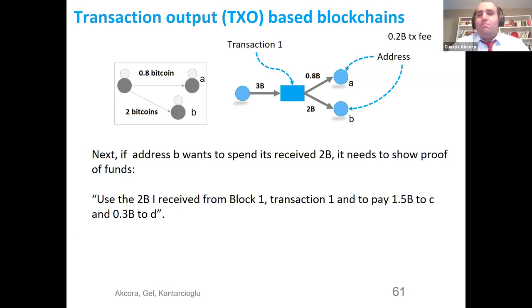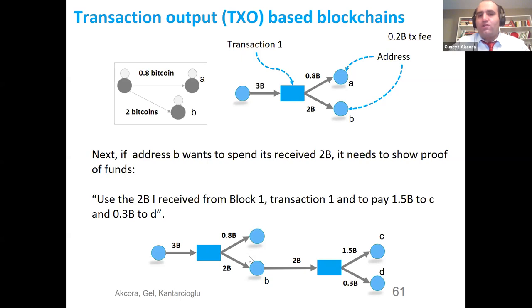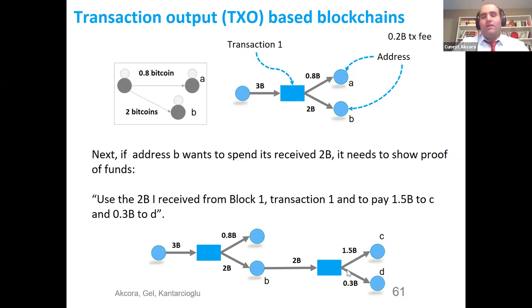Let's say B received two Bitcoins in a transaction and wants to spend them in another transaction. It needs to show proof of funds. When B wants to spend these two Bitcoins, it has to say: I use the two Bitcoins I received from block one, transaction one. I want to pay 1.5 Bitcoins to C and 0.3 Bitcoins to B. The difference between inputs and outputs is 0.2, but this transaction fee depends on the user.